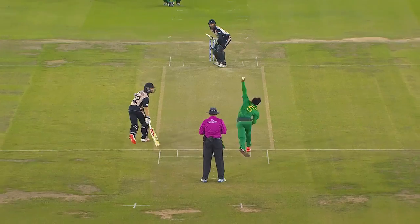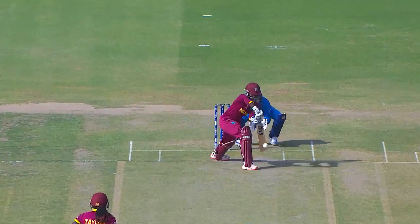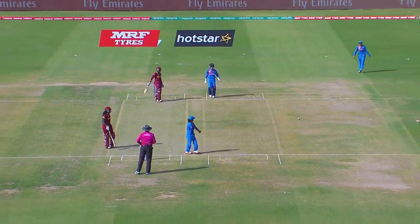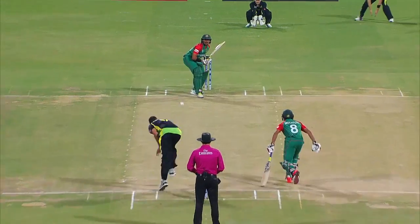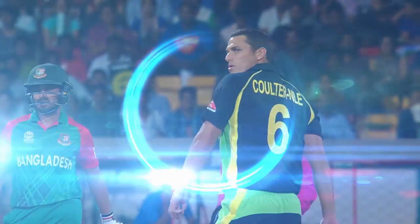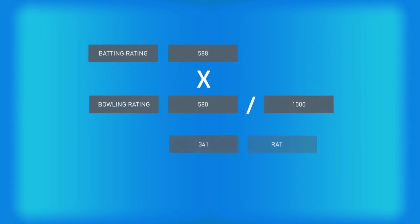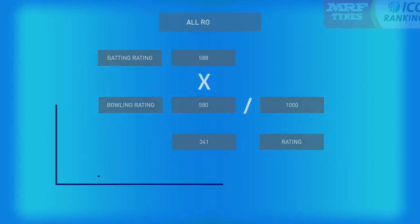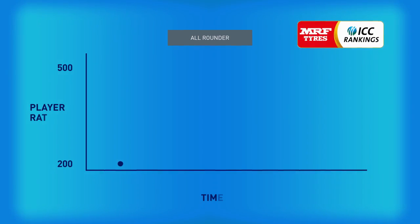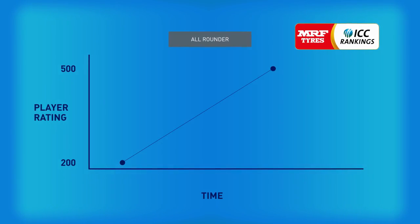Especially in T20 cricket, where a bowler would get more credit for bowling 4 overs 0 for 10 than for figures of 4 overs 2 for 40. There are also rankings for all-rounders, which are found by multiplying their batting and bowling rating and dividing by 1,000. A ranking of 200 points is generally a sign that a player is a genuine all-rounder, and 500 points is exceptional.